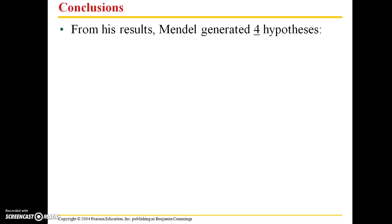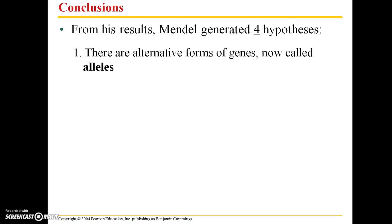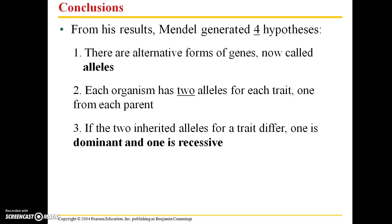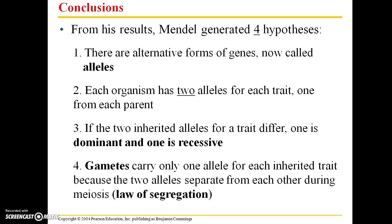From his results, Mendel generated four hypotheses. The first is that there are alternate forms of genes — now we call these alleles. His second hypothesis was that each organism has two alleles for each trait, one inherited from each parent. His third hypothesis was that if the two inherited alleles for a trait differ, then one is dominant and one is recessive. His fourth hypothesis was that gametes carry only one allele for each inherited trait because the two alleles separate from each other during meiosis. This is known as the law of segregation. Gametes refer to sex cells — sperm or egg cells — so each sperm or egg cell carries just one allele for each inherited trait.